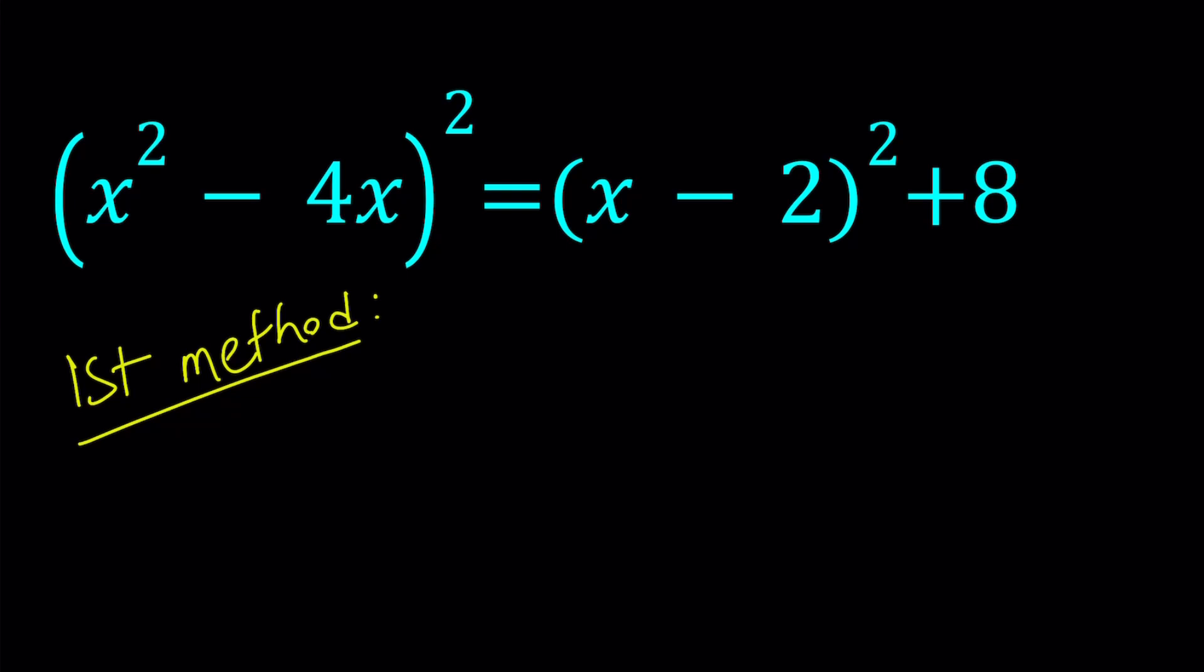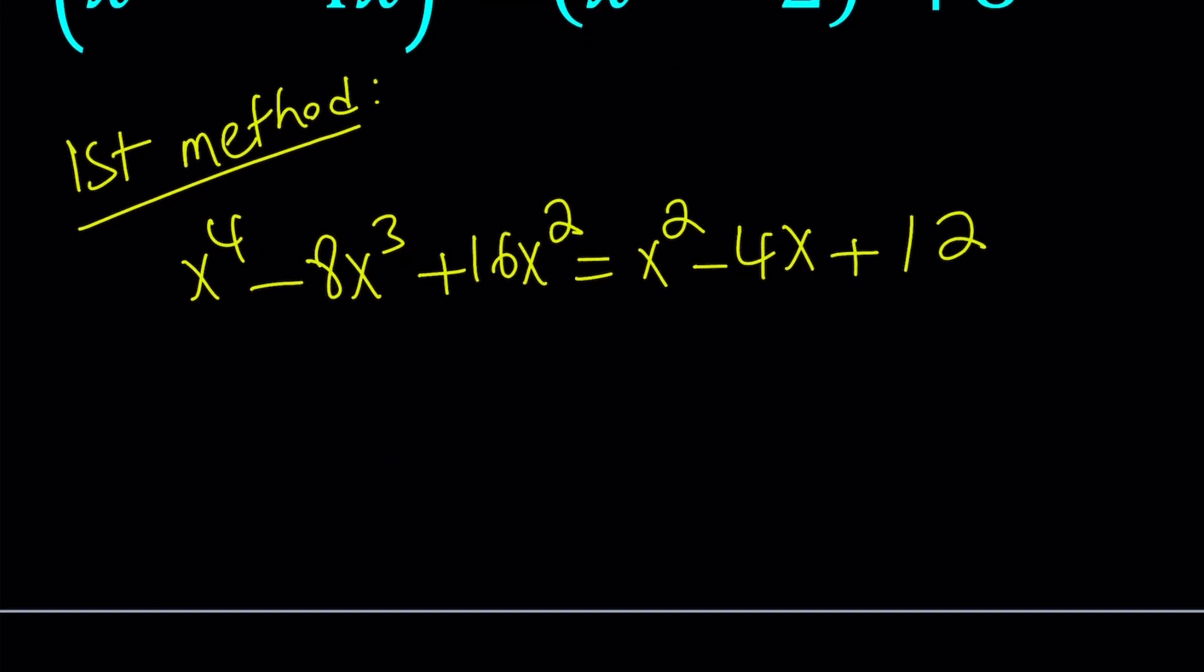The left hand side should be fairly easy: x to the fourth power minus 8x cubed plus 16x squared. You could also take out an x and square it separately, wouldn't matter, it's the same thing. And then right hand side x squared minus 4x plus 4 plus 8 which is plus 12. Now let's go ahead and put everything on the same side: x to the fourth minus 8x cubed, now 16 minus 1 is 15x squared plus 4x minus 12 equals 0.